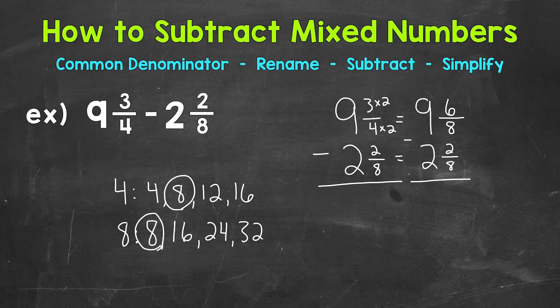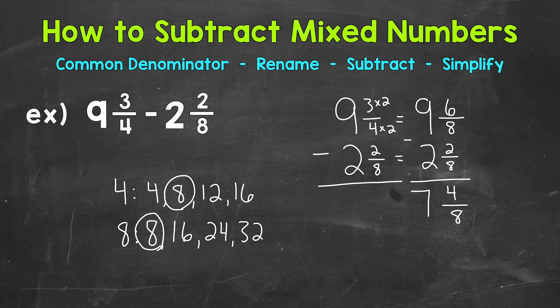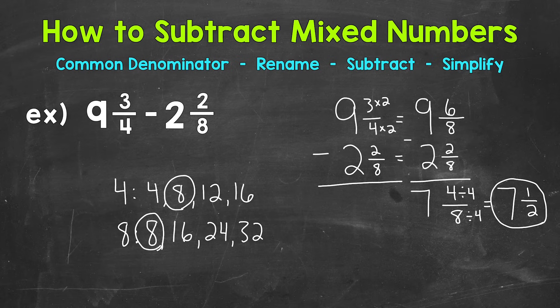Now that we renamed what we needed to rename, we have a common denominator of 8 and we're able to subtract. Subtract the fractions: 6 eighths minus 2 eighths — subtract the numerators, 6 minus 2 gives us 4, and we keep the denominator of 8. Then subtract the whole numbers: 9 minus 2 gives us 7. So we get 7 and 4 eighths. Always check to simplify — 4 eighths has a greatest common factor of 4. 4 divided by 4 is 1, 8 divided by 4 is 2. So our simplified answer is 7 and a half.